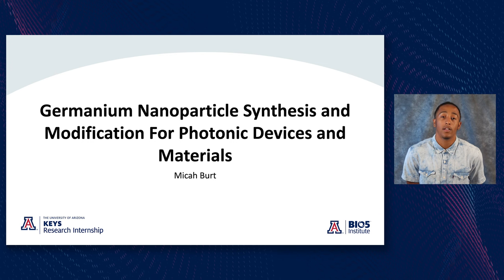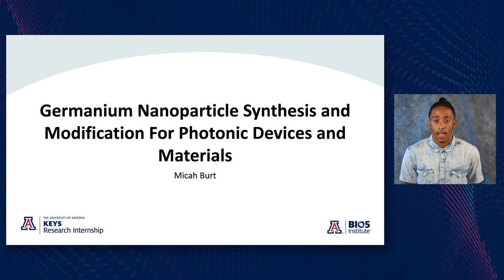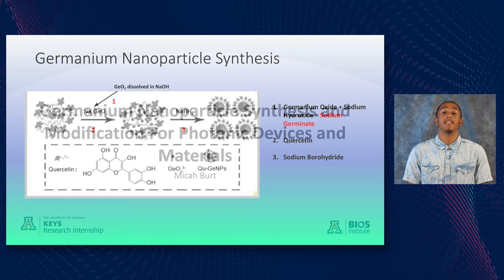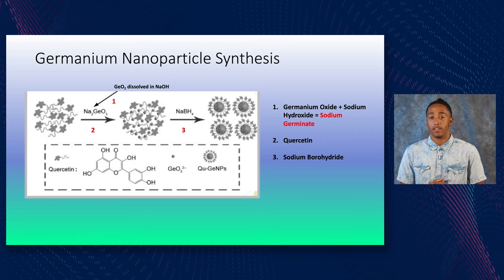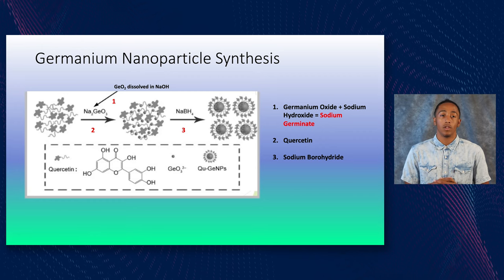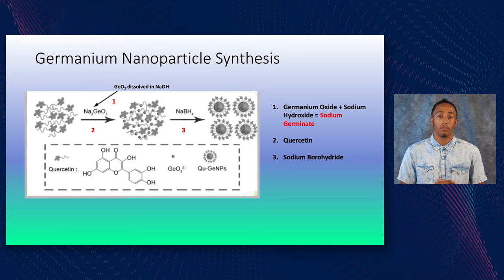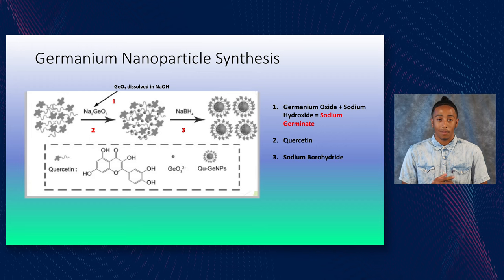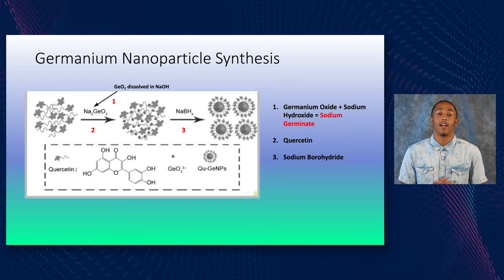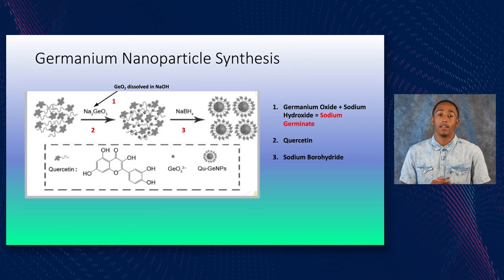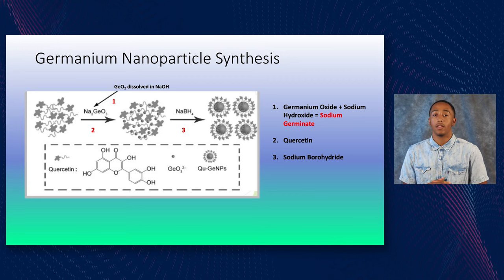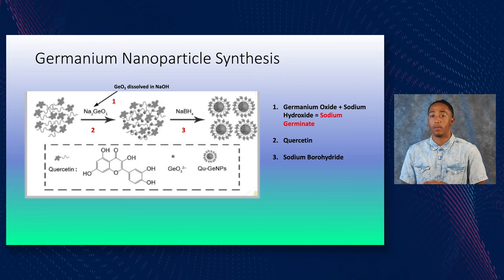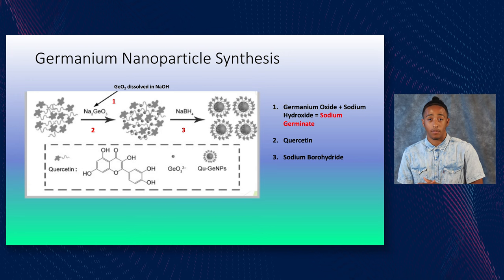Hello, my name is Micah Burt. This summer I worked in Dr. Ewan McLeod's lab, where we focused on synthesizing and modifying germanium nanoparticles for optical sensors and photonic devices. We used sodium borohydride, sodium hydroxide, germanium oxide, and quercetin. The sodium hydroxide was used as a solvent to dissolve the germanium oxide, sodium borohydride reduced the germanium oxide ions to nanoparticles, and quercetin was used to stabilize these particles from further reactions.